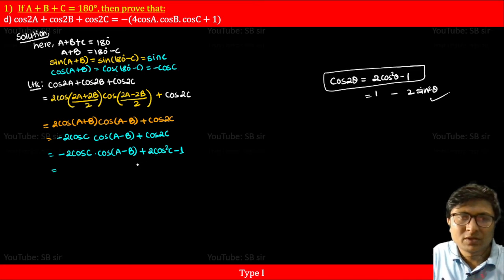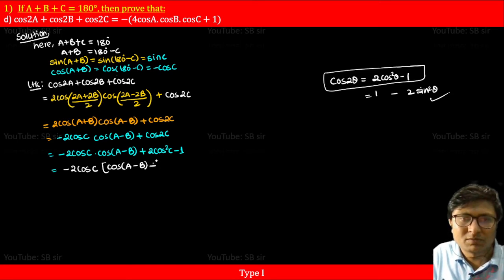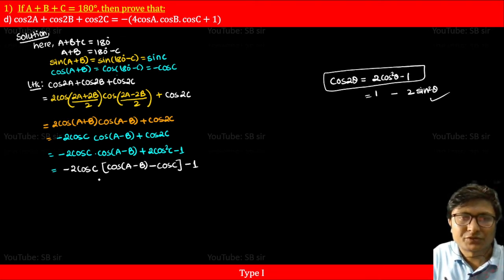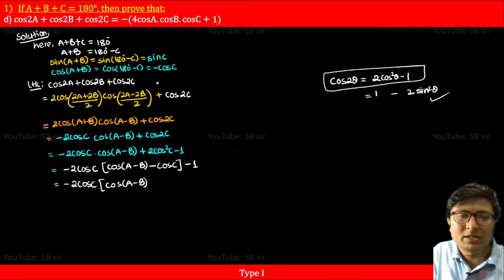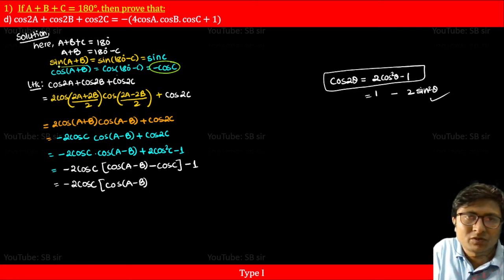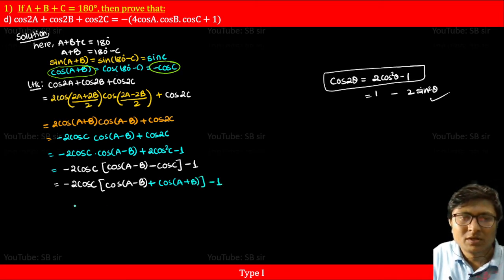Taking 2cosC as common, we get 2cosC times (cos(A-B) plus cosC) minus 1. Be very careful with signs here — minus into plus gives minus. So it becomes minus 2cosC times (cos(A-B) minus cosC) minus 1. Now I am replacing minus cosC with plus cos(A+B), since cos(A+B) equals minus cosC.